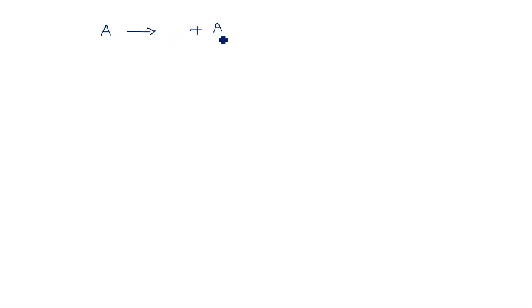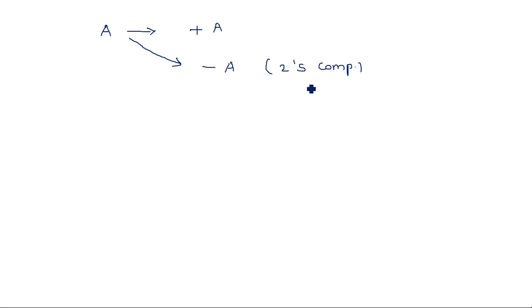When you are taking a number, suppose A is a number that can be represented as plus A in normal representation. The same number can also be converted into minus A by taking the two's complement of the given number. Earlier in this subject, I introduced 9's complement and 10's complement — 9's complement is the subtraction of the given number from 9, and adding 1 gives you the 10's complement. Similarly, 2's complement is nothing but 1's complement plus 1.